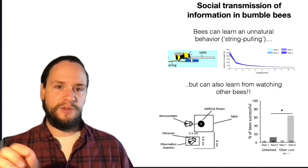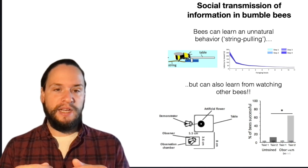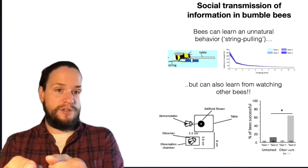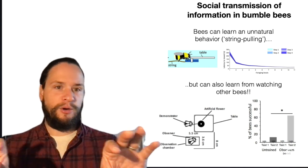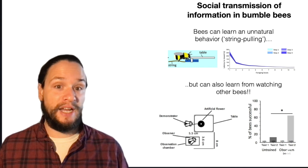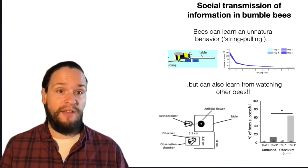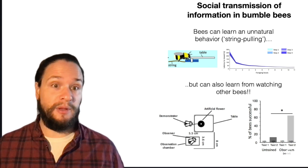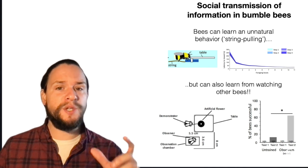So, for example, here you're seeing a sort of diagram of bumblebees being trained to essentially pull on a string of a food resource and pull it out from under essentially a table that they can't get under. A very unnatural behavior. So, it's cool that bees can learn that behavior. It tells you about their sort of flexibility and kind of amazing learning ability.